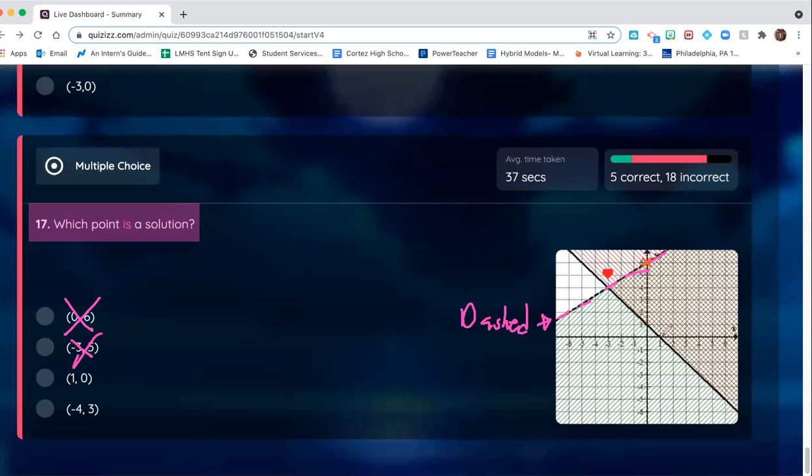Let's look at one, zero. One, zero is on this line, which is solid. It's in this shaded region too. So this is it.